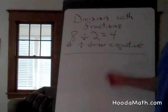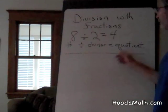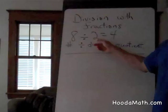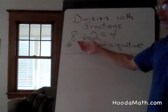To check to see if your answer is correct, you multiply the quotient 4 times the divisor 2, and your result or product is 8.